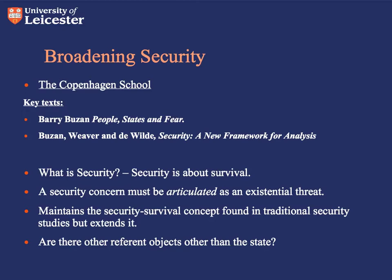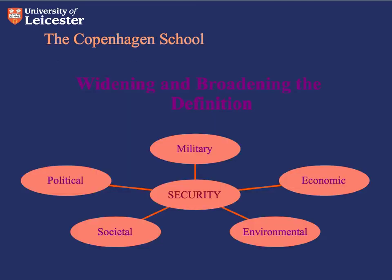We can argue that the Copenhagen School broadens the notion of security, but it doesn't necessarily deepen it. In his book People, States and Fear, Barry Buzan sets about broadening the subject of security to include not just the military sector, but five categories: military, economic, environmental, societal, and political security.